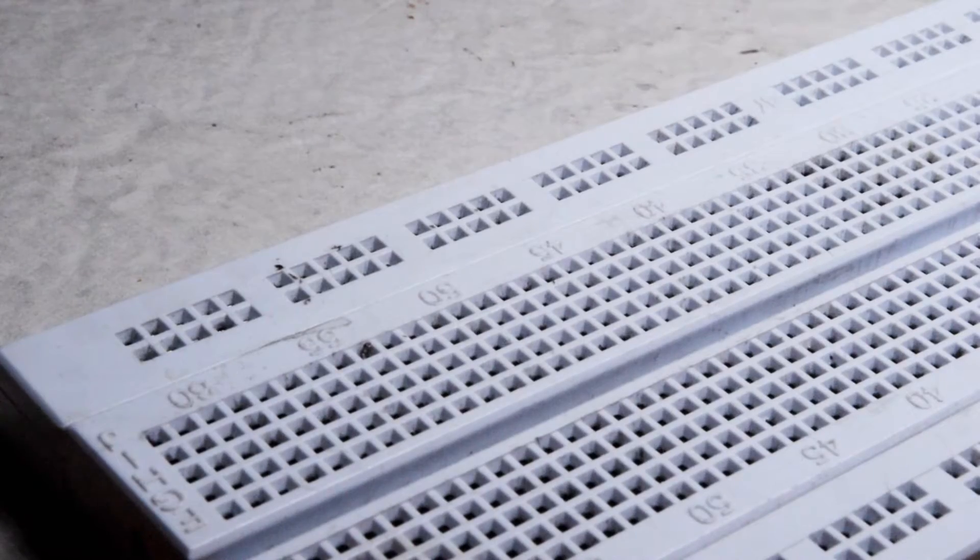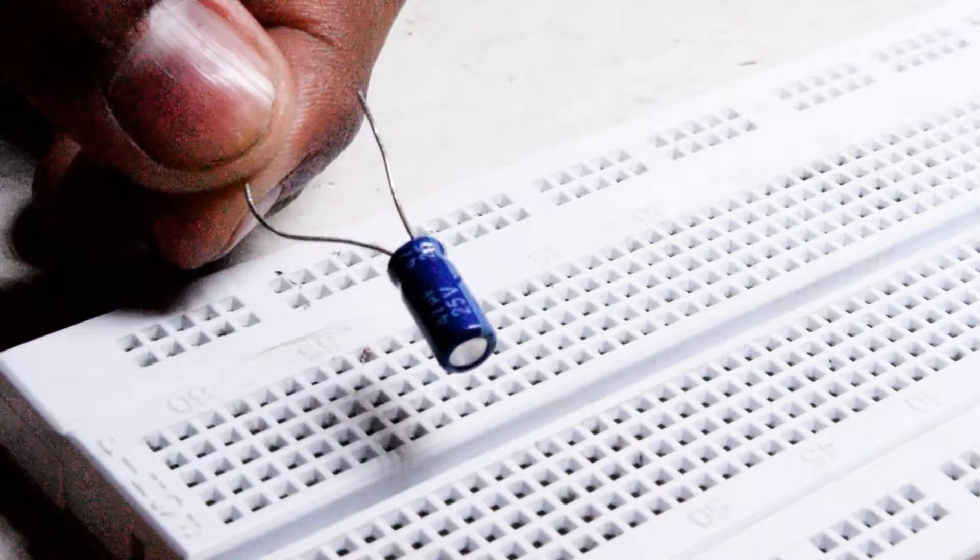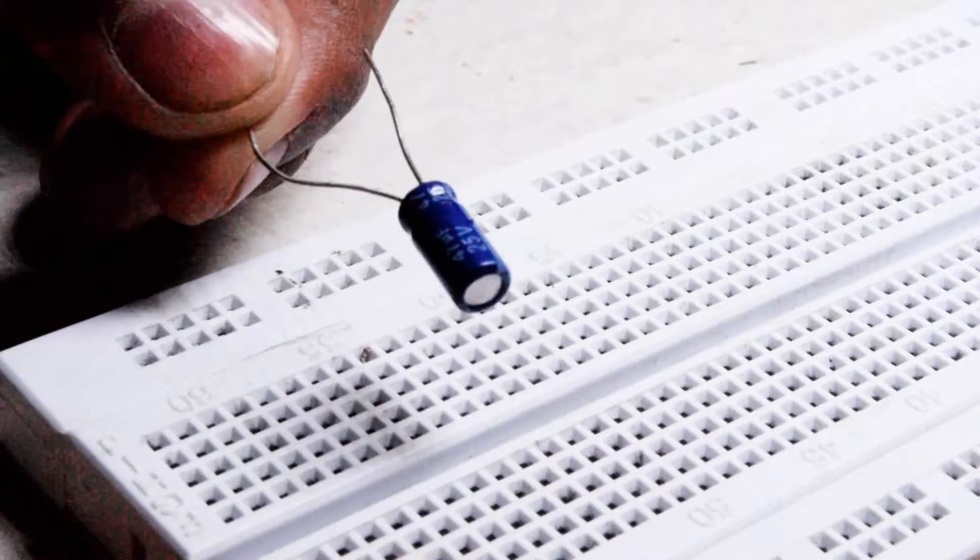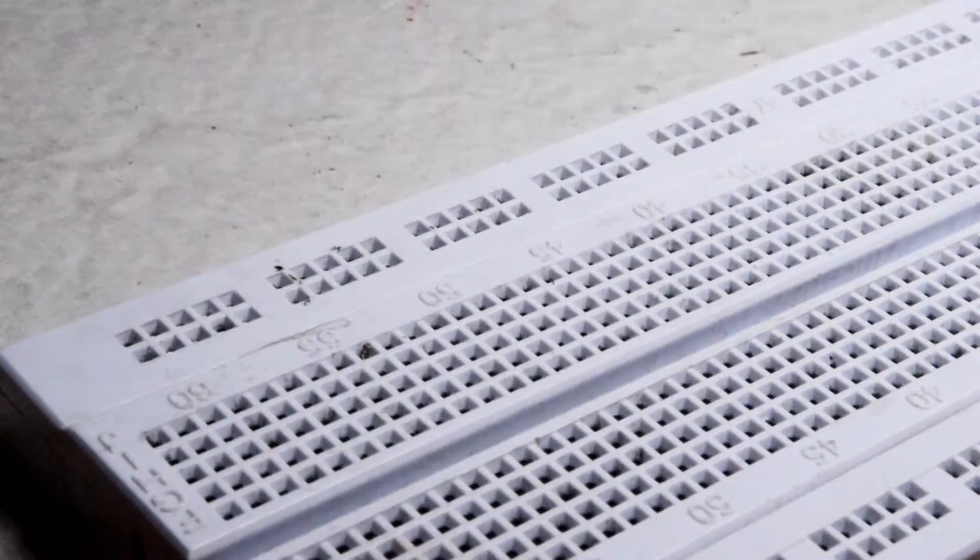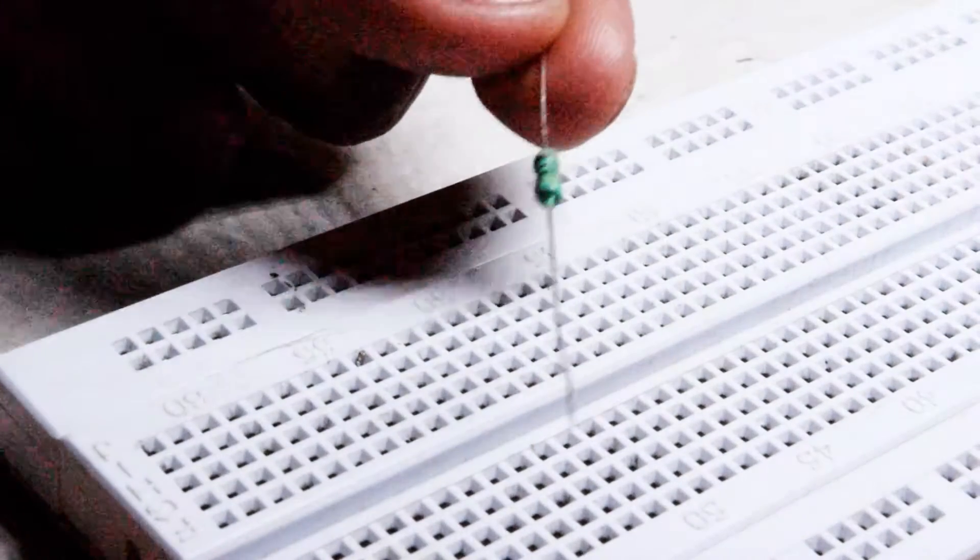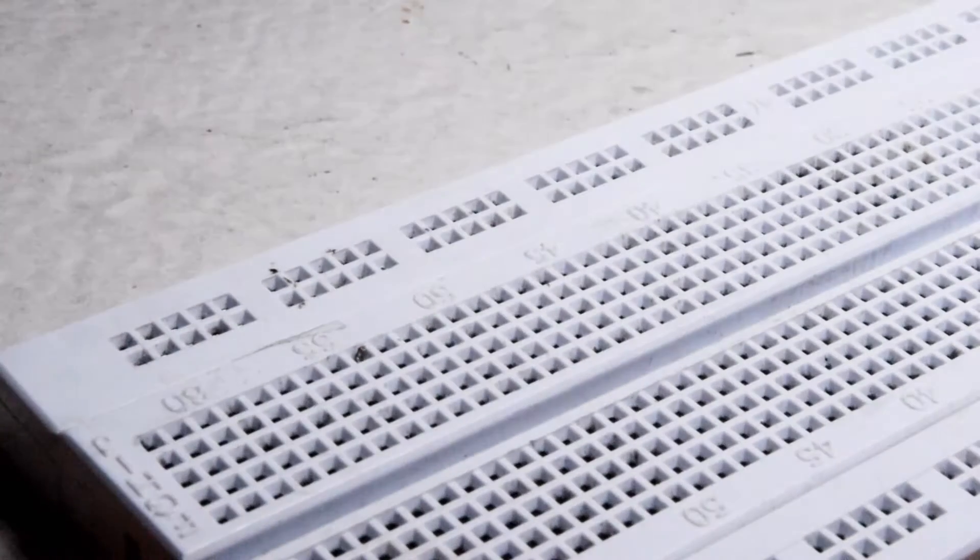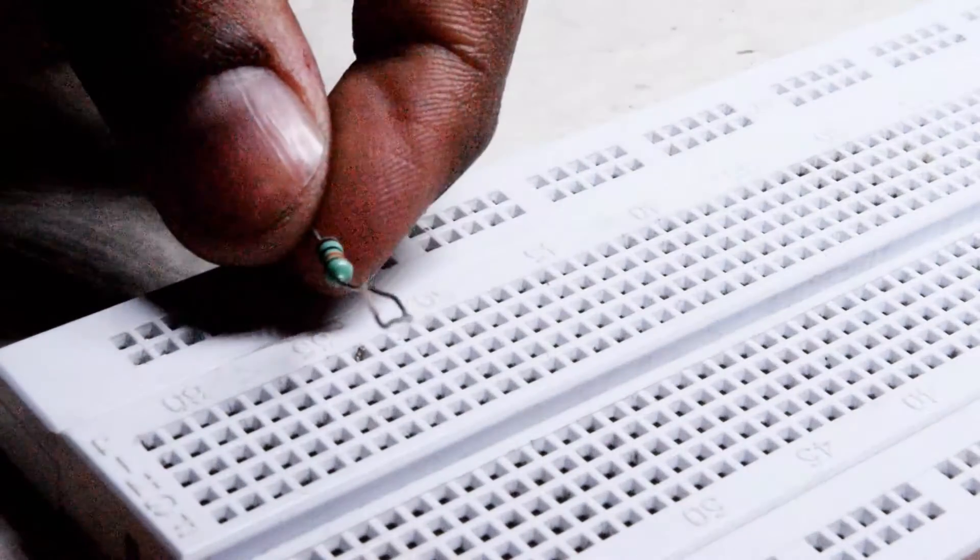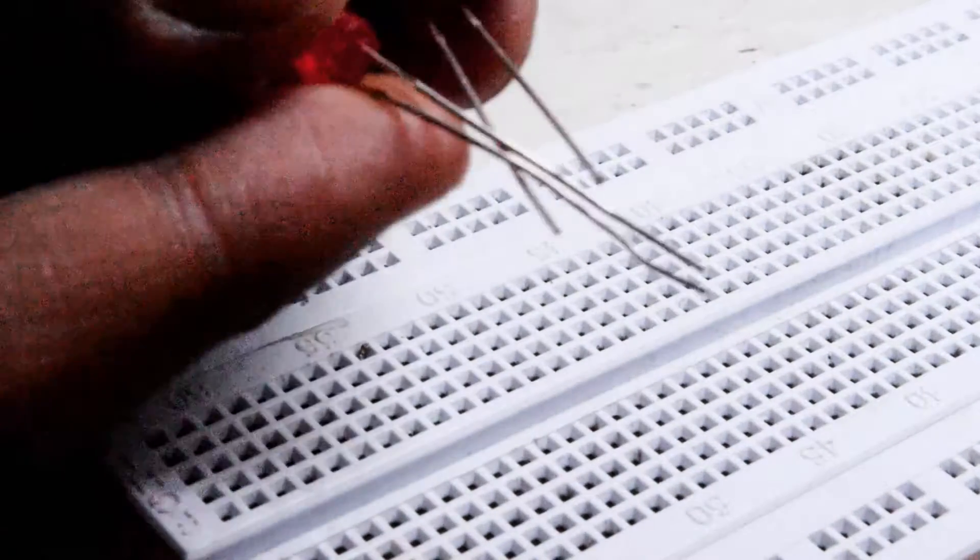Materials you require: a 47 microfarad electrolytic capacitor, value can be between 10 and 200. Then a 220 ohms resistor, a 1k resistor, a 10k resistor, and two LEDs of any color.